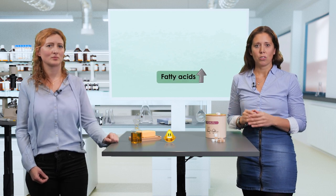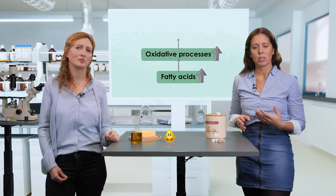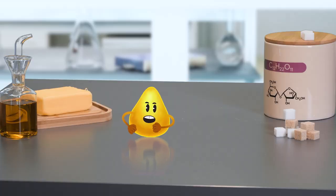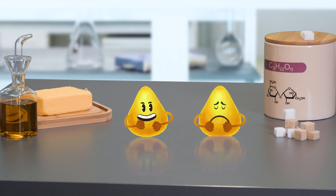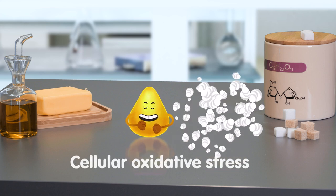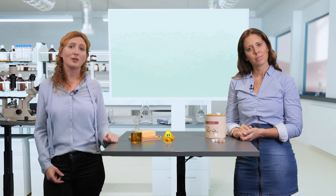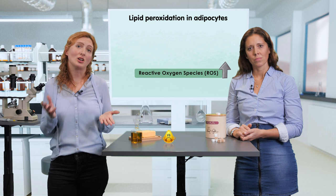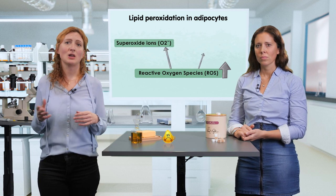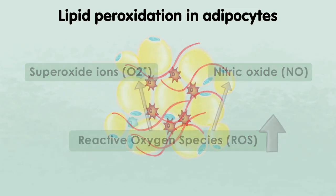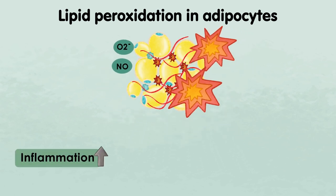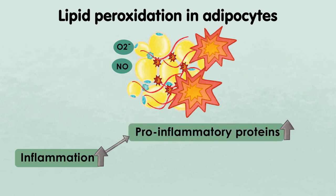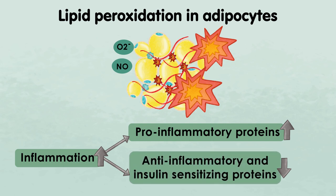Since our focus is the adipose tissue, let's follow up what happens here. The large amount of fatty acids stored in adipocytes might exacerbate oxidative processes such as lipid peroxidation. This produces a lot of cellular oxidative stress, as the lipids change because they get oxidized. This process is characterized by a considerable rise in reactive species of oxygen and nitrogen, including superoxide ions and nitric oxide. A consequence of this oxidative explosion is the recruitment of numerous immune cells from the periphery to the white adipose tissue, enhancing the local level of inflammation characterized by a rise in inflammatory proteins such as TNF, and a reduction in anti-inflammatory and insulin-sensitizing proteins.